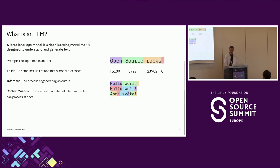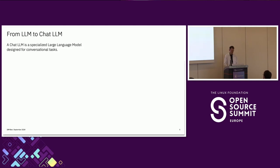The final key term is context window. If you put some text into an LLM there might be a problem — the LLM cannot handle the full input because it's too large. So you need to be aware of the context window, which is the maximum number of tokens you can put in.